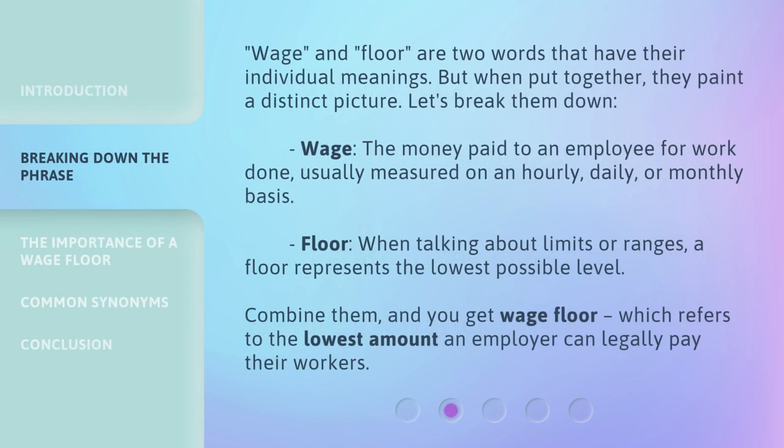Wage and floor are two words that have their individual meanings, but when put together they paint a distinct picture. Wage: the money paid to an employee for work done, usually measured on an hourly, daily, or monthly basis. Floor: when talking about limits or ranges, a floor represents the lowest possible level. Combine them and you get wage floor, which refers to the lowest amount an employer can legally pay their workers.